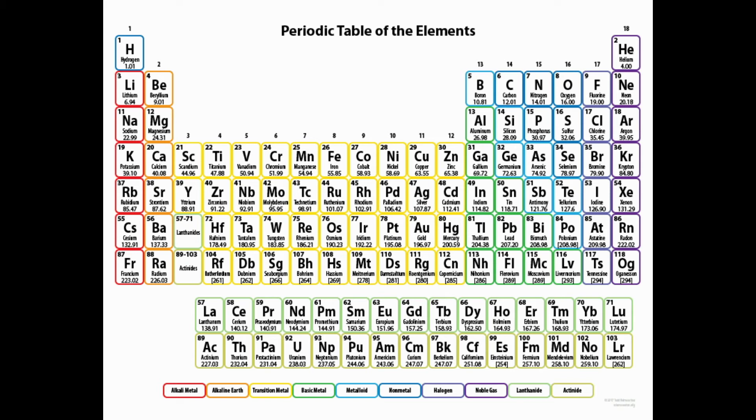Conversely, boron has a greater electron affinity than francium. Let's look at some other examples.